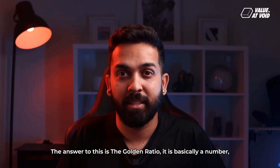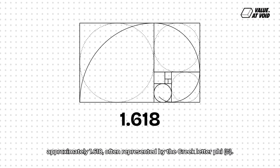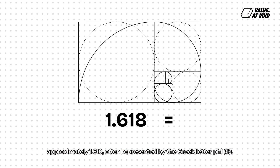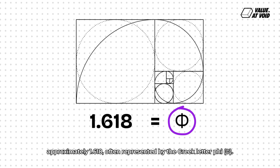It is basically a number approximately 1.618, often represented by the Greek letter Phi.